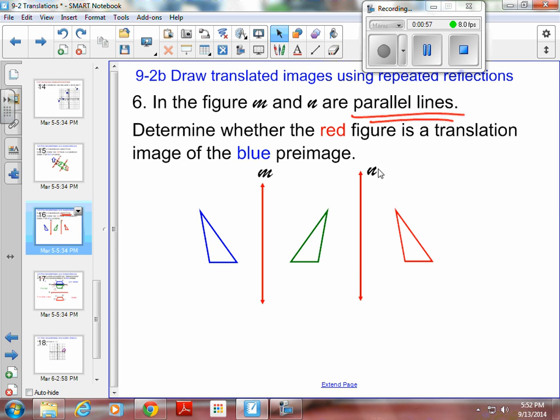We can look at that again. I'm going to take red. I reflected it across N and got the green one. I reflected the green one across M and got the blue one.